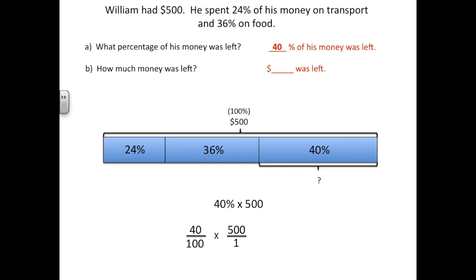Now we can look to cross-cancel. 500 and 100 are both divisible by 100, so we can cross-cancel and divide both by 100. We're now left with 40 over 1 times 5 over 1, which equals 200 over 1, which is the same as 200. And don't forget our whole amount is in dollars, so our answer is also going to be in dollars. 40% of $500 is $200, so $200 was left.